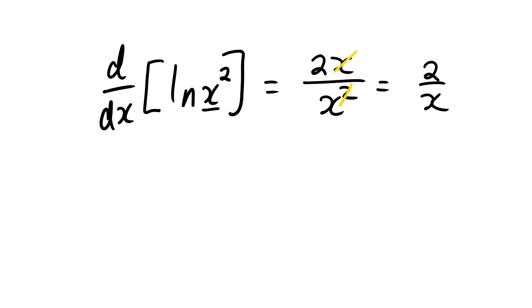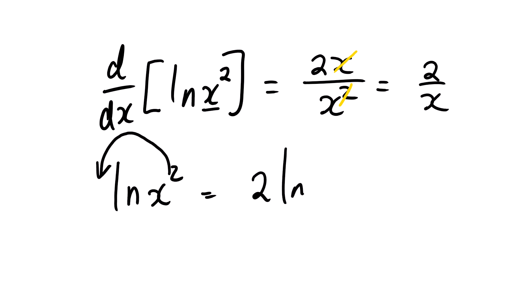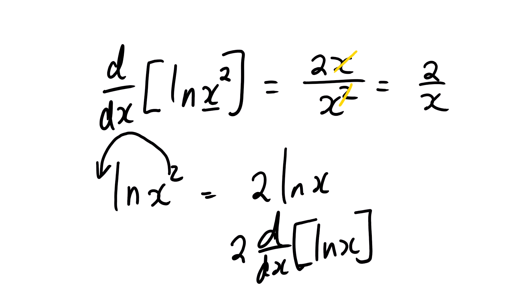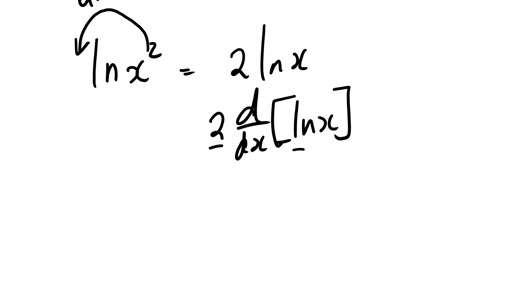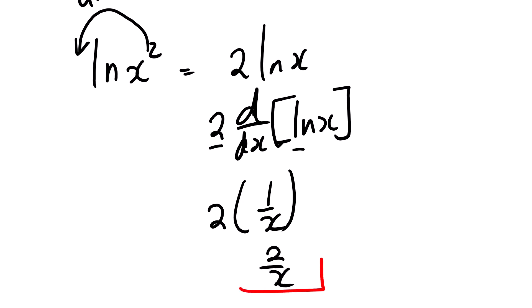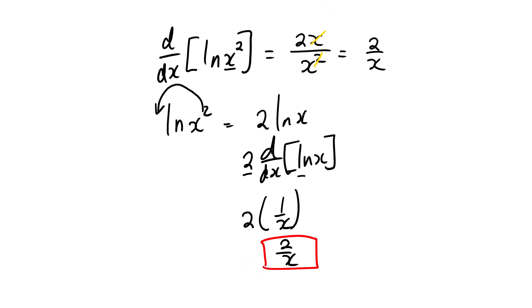There is another way to find the derivative of ln x². We bring the power 2 down to get 2 ln x, then separate the constant: it's 2 multiplied by the derivative of ln x. We know the derivative of ln x is 1 over x, so 1 over x multiplied by 2 gives 2 over x — the same answer.